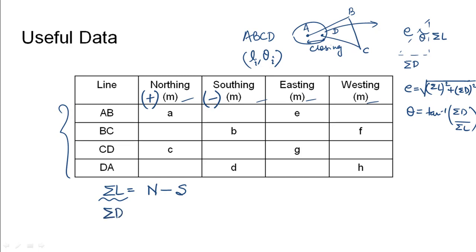Similarly we do summation of departures as Easting minus Westing. We can see that the Northing would be A plus C and the Southing is B plus D. Similarly Easting is E plus G and the Westing would be F plus H. The thing that needs to be remembered is Easting should be taken with a positive sign and Westing should be taken with a negative sign.